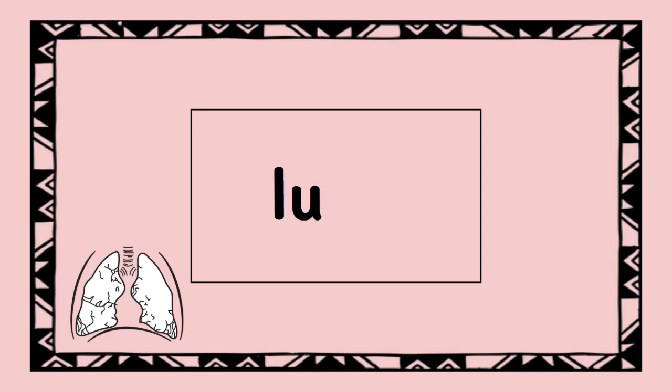Next, let's spell the word lung. Ready? We'll say the sounds that we hear: L-U-N-G. First, we heard L, so we need the letter L. Then we heard U, so we need the letter U. And then we heard NG, so we needed the letters NG. Lung is in the UNG family because we use the letters L-U-N-G — lung.